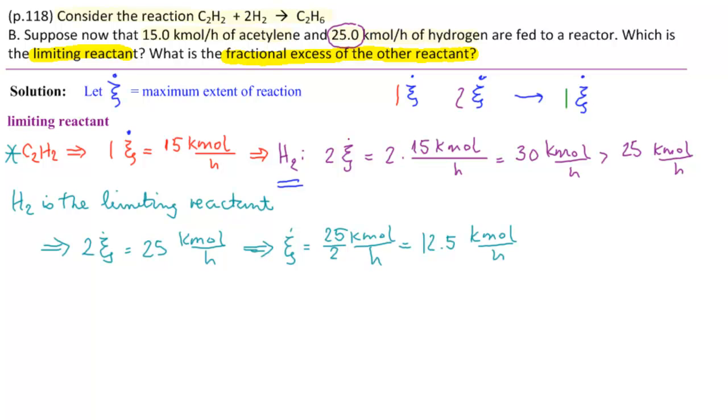And this would imply that C2H2, which is being used at the rate of 1ξ dot, would be 12.5 kilomoles per hour being consumed when the maximum reaction occurs. So now we can calculate the fractional excess of C2H2.